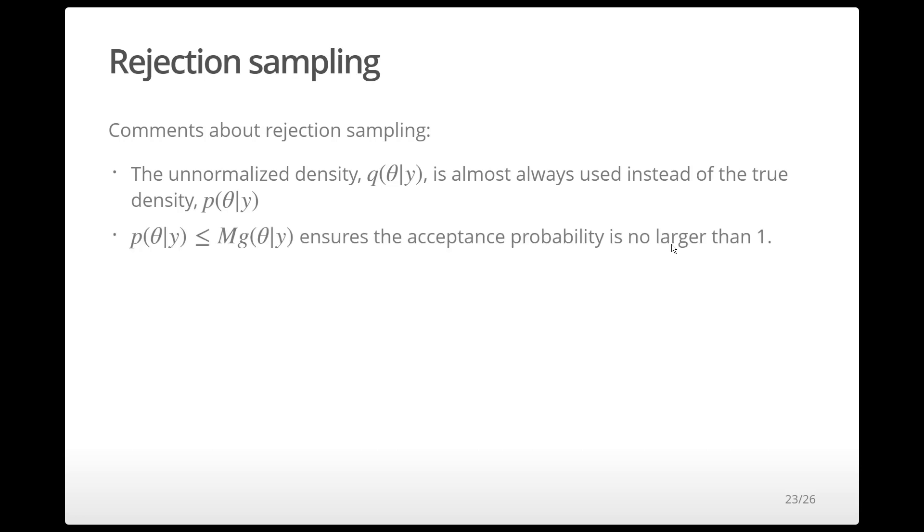The fact that the importance ratio is bounded ensures that our acceptance probability is always less than or equal to 1. Ideally, you want the bounding function m times g to be as close to the target density as possible while still remaining above it.